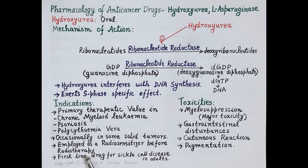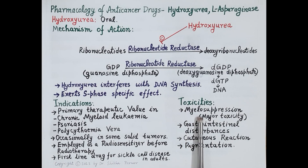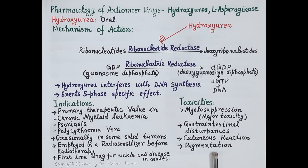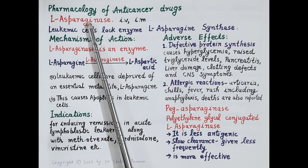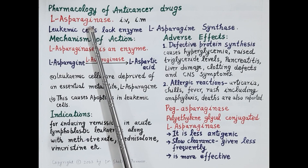Hydroxyurea is also a first-line drug for sickle cell disease in adults. Regarding toxicities, myelosuppression is the major toxicity. It can also cause gastrointestinal disturbances, cutaneous reactions, and pigmentation. This concludes the pharmacology of hydroxyurea.